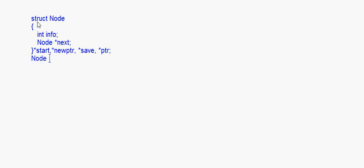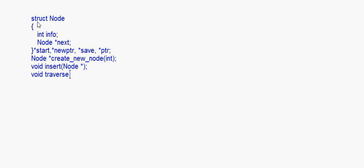We are not going to write create node and all in this video, but I'll put the prototypes here: create new node, insertion — these are all explained in the previous videos. Then void insert, passing an address with a node pointer. And then void traverse, also passing a starting address. These are the prototypes. In void main, the linked list creation begins: start and rear are set to null initially.